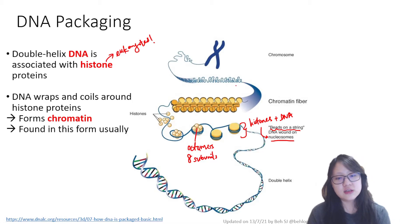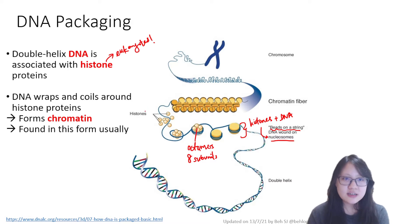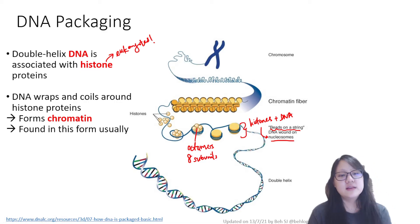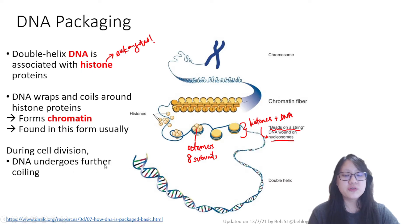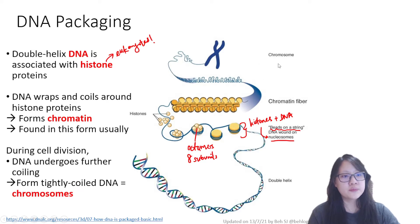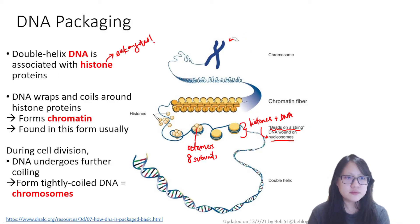Usually chromatin is found in this form. When the cell is not dividing — when the cell is just going through its normal period of life — DNA is usually found in the form of chromatin. However, during cell division, this chromatin undergoes further coiling into chromatin fiber, and then into a chromosome. So it wraps and wraps, forming a very condensed structure.